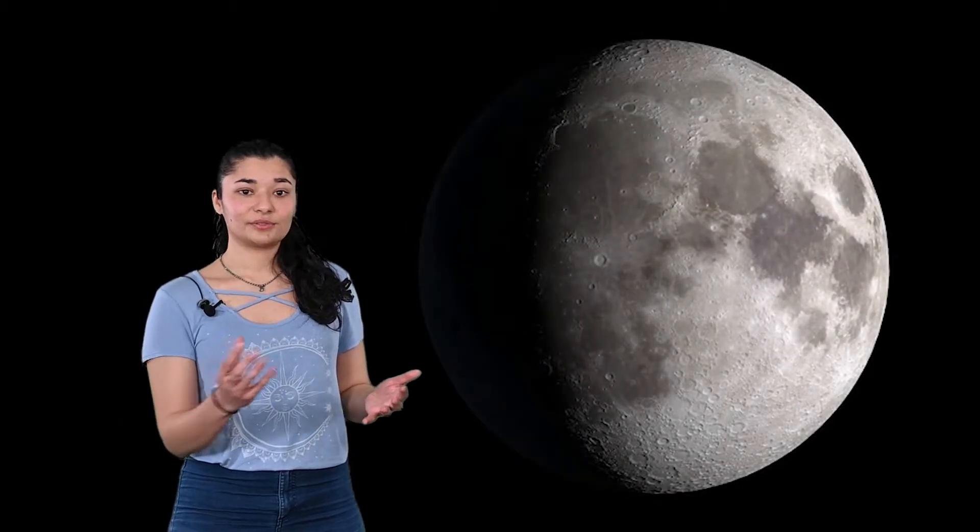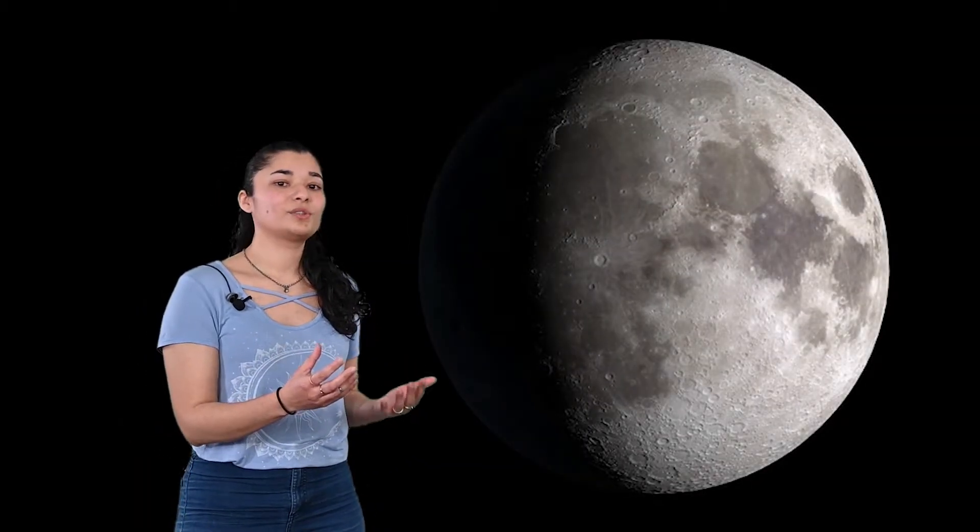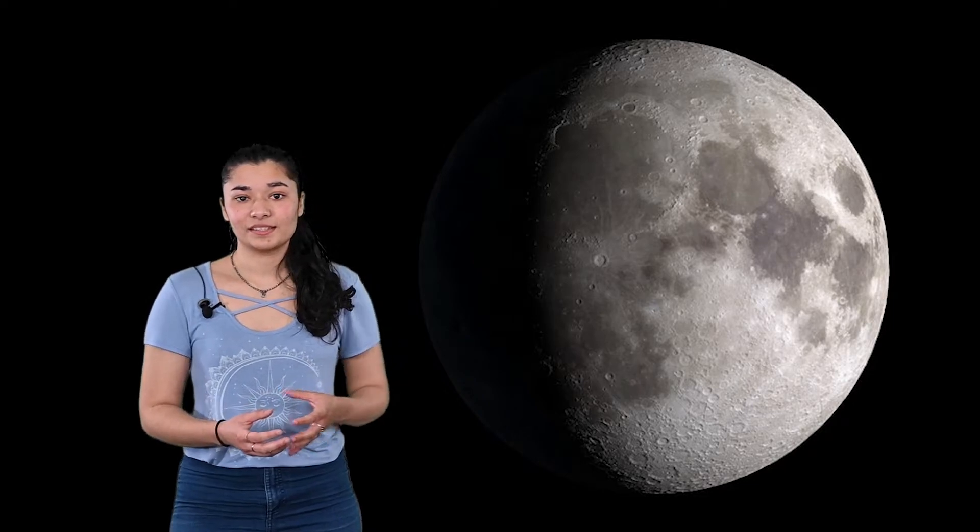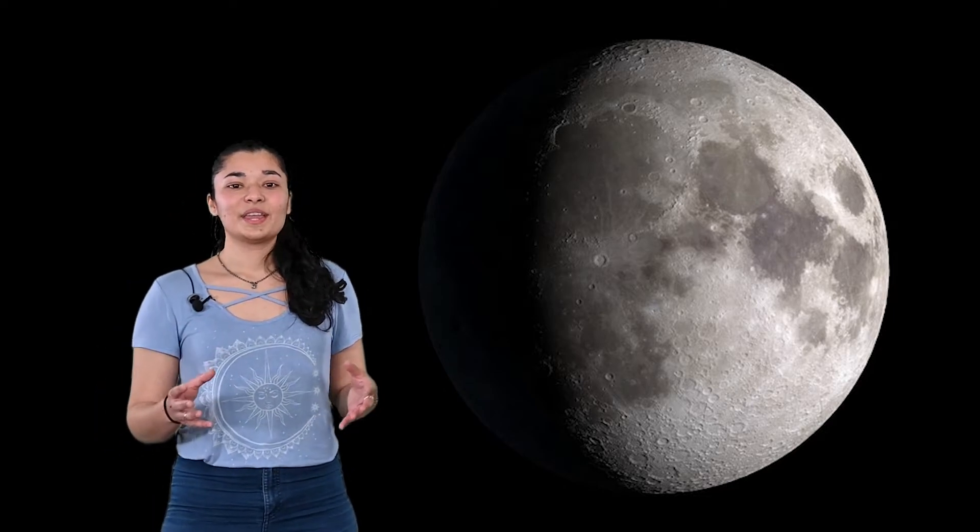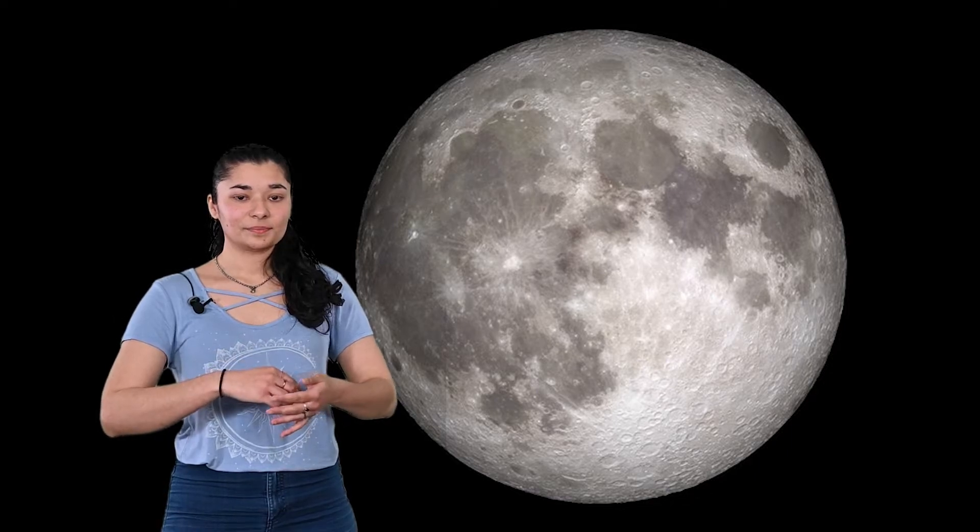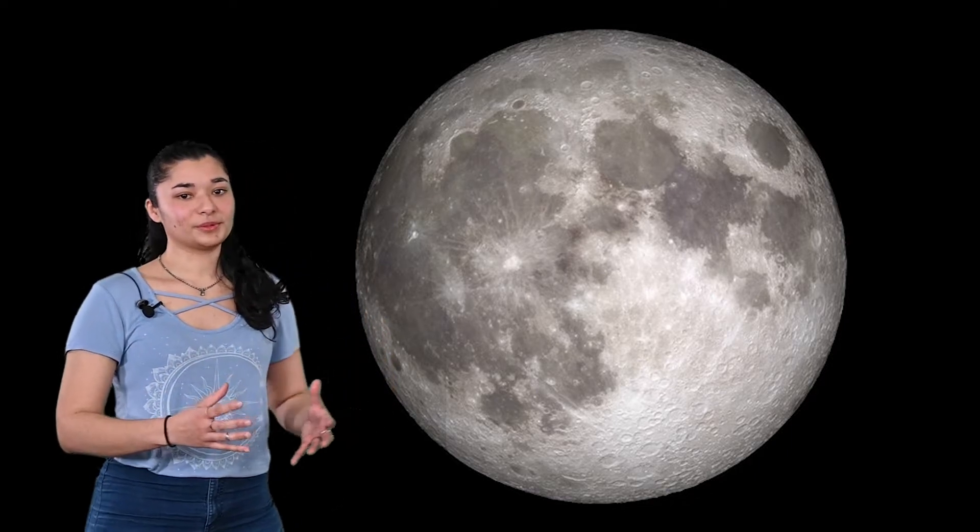More and more of the sun's light is reflected off the moon as we get into our waxing gibbous phase. Now, only a sliver of darkness is left. So, finally, the moon is on the opposite side of the Earth, opposite the sun, and is fully lit up. This is our full moon.